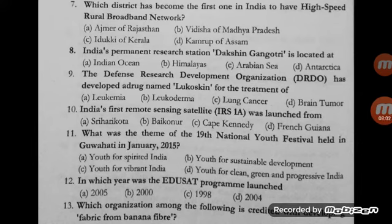Question number 12: in which year was the EDUSAT program launched? Options: 2005, 2000, 1998, and 2004. The correct answer is D, 2004. EDUSAT is a communication satellite launched on 20th September 2004 by the Indian Space Research Organization. It is the first Indian satellite built exclusively to serve the educational sector.